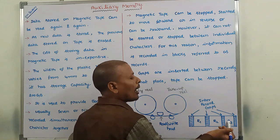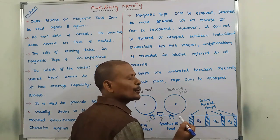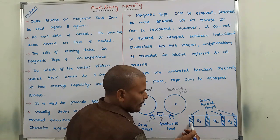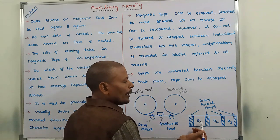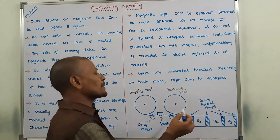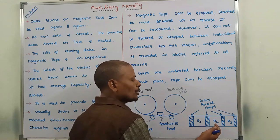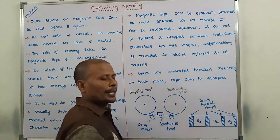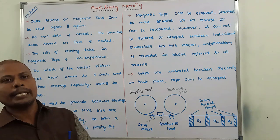R1, R2, R3 are the records in which information is stored. These are the gaps between them. Two individual records are separated by using gaps — those gaps are called inter-record gaps. R1 and R2 are separated by a gap, R2 and R3 are separated by a gap. In that gap, we stop the magnetic tape.